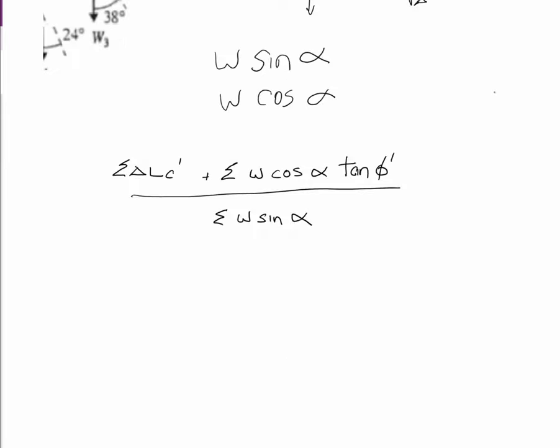Okay, that brings us to the equation to calculate this. And this is the factor of safety. Equals the sum of delta L c prime plus the sum of W cos alpha tan phi prime on the sum of W sin alpha. And it all looks very confusing, but it'll come down to a fairly simple thing in the end.